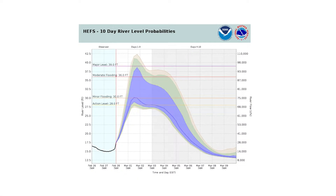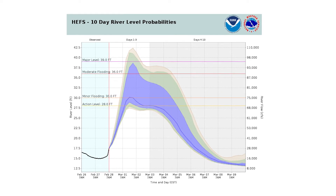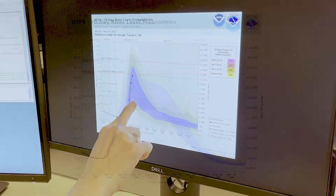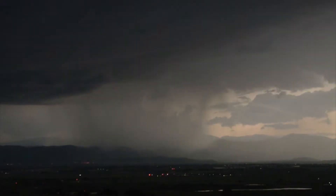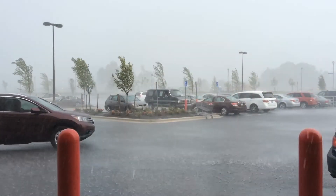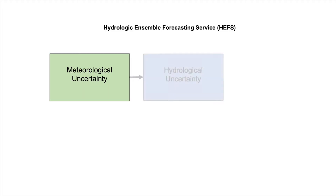The Hydrologic Ensemble Forecast Service, or HEFS, is part of the next generation of probabilistic forecasting services being deployed by the National Weather Service. The National Weather Service has deployed HEFS to fill a need for nationally consistent ensemble hydrologic forecasting. By combining the meteorological and hydrological uncertainty, HEFS produces a better estimate of the total uncertainty in the streamflow forecast.